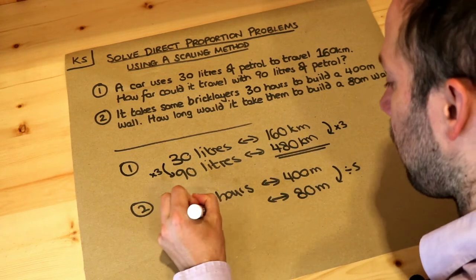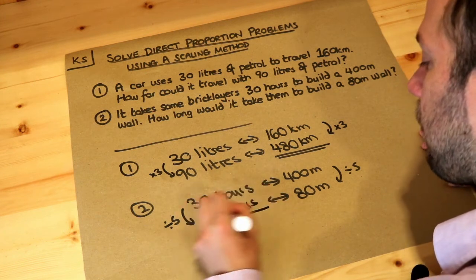So we do 30 divided by five, would be six hours, and that's the final answer.